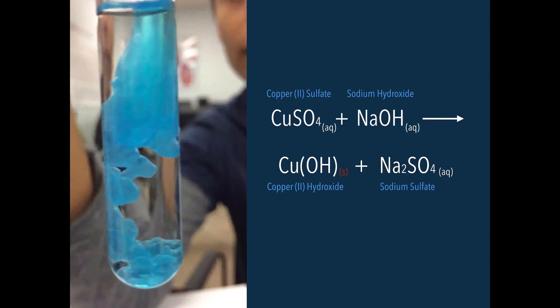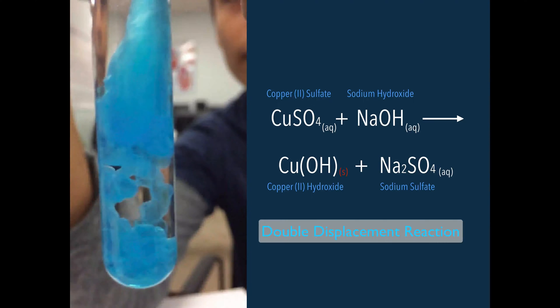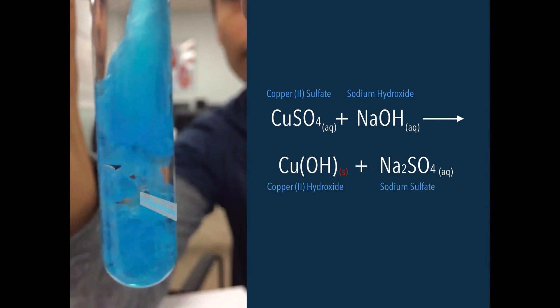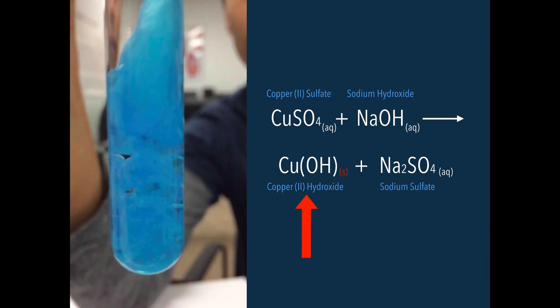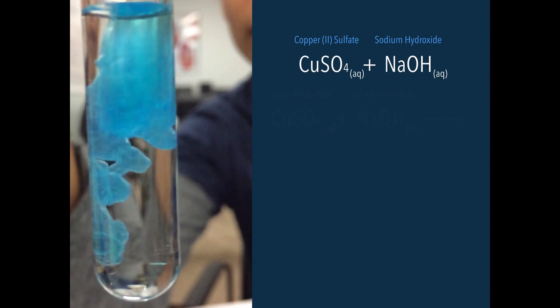As soon as they're combined, you have a double displacement reaction. Copper hydroxide forms into a solid and sodium sulfate remains an aqueous solution. Let's take a look at this equation.